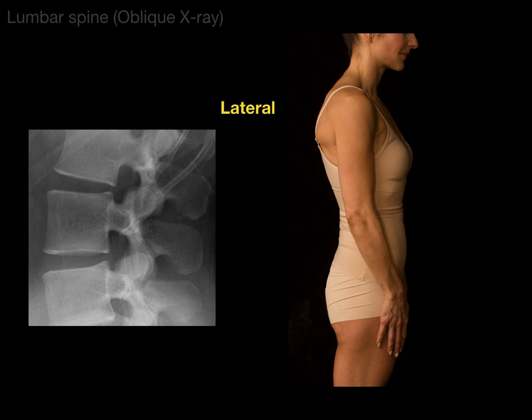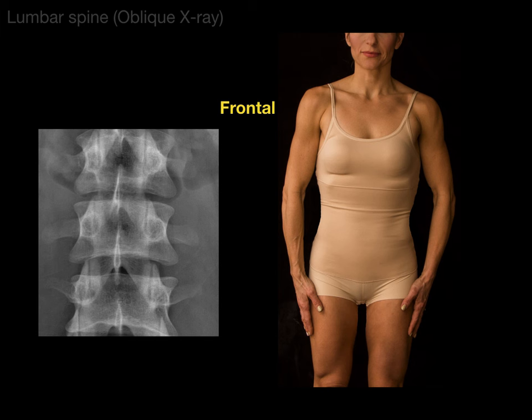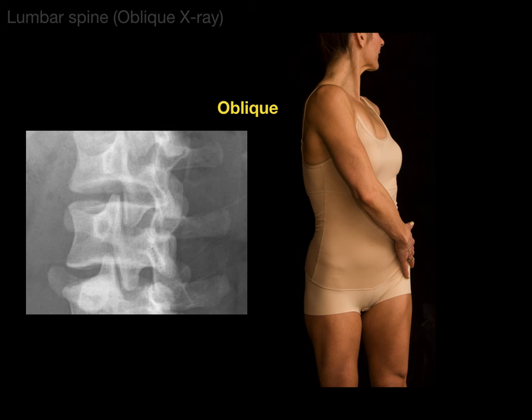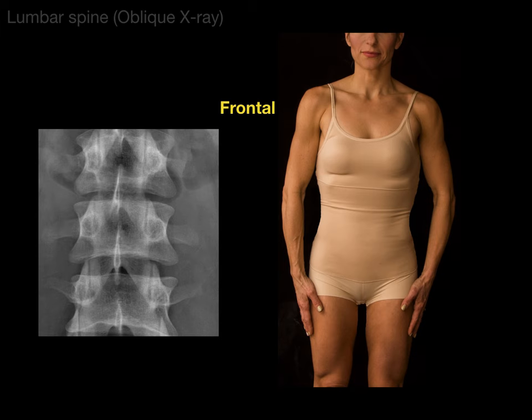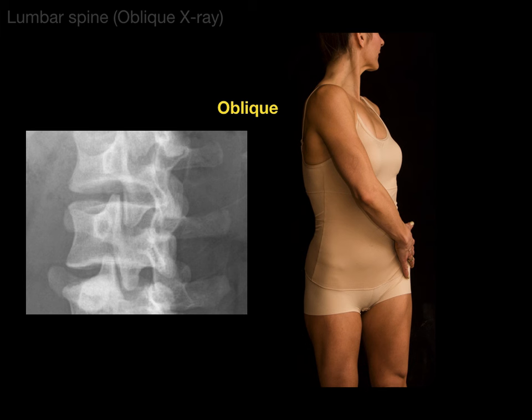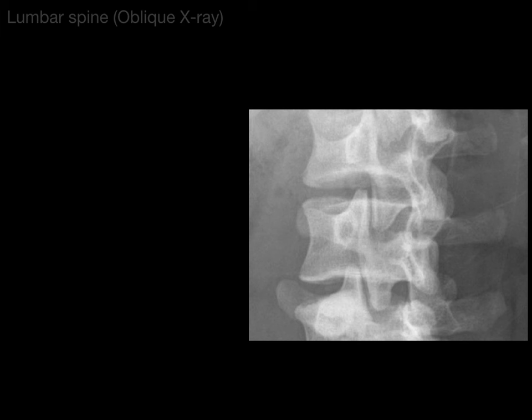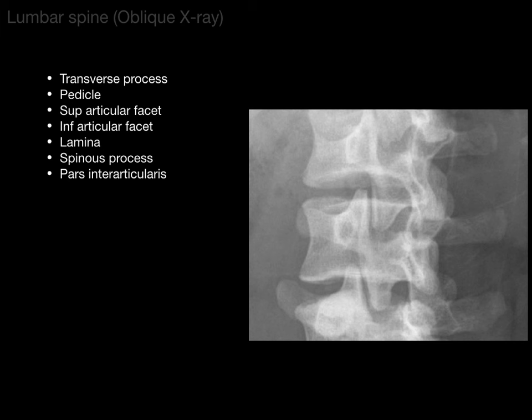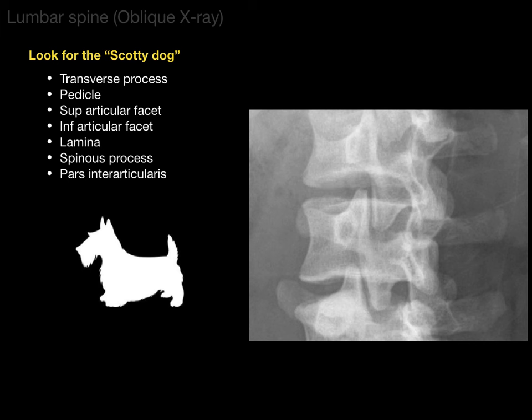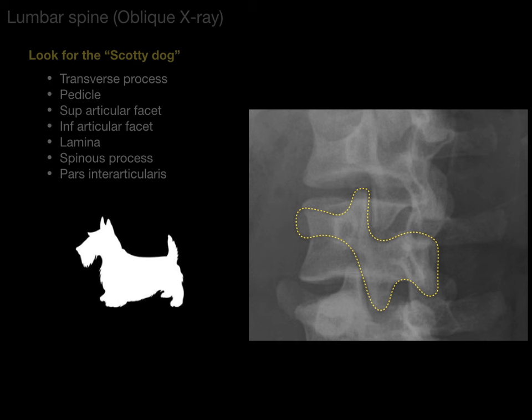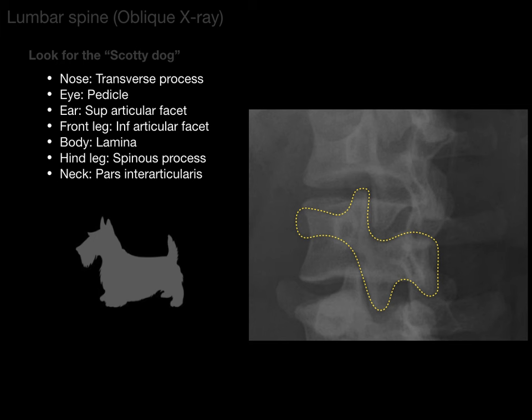The oblique view was hard for me when I first started learning imaging. There's a lateral view, there's a frontal view, and there's an oblique view. Watch a vertebral body go from frontal to oblique — try to find a transverse process, follow it, and see if you can find a spine. This becomes important in understanding the oblique view — how things are just off at an angle. There are all the same structures we've covered before. To best see these, let's look for a Scotty dog. What's a Scotty dog? A Scottish terrier.